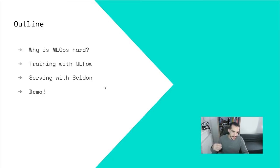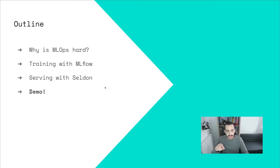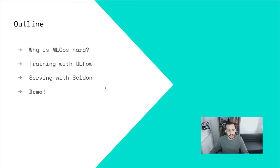So what are we going to see today? First of all, we're going to start by introducing the MLOps problem and why it's hard. I'm aware most of you have probably heard about MLOps already. However, I do think it's useful to put the context together so that we can all share the same base. We will also have a look at MLflow and Seldon and see how they can interact to help manage the machine learning lifecycle. And we will see a quick demo of how both play together.